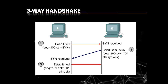Receiver B receives this synchronized packet and then B sends an acknowledgement plus its own synchronized packet. Then device A receives it and the session is created. If any packet is lost, the session is not established.